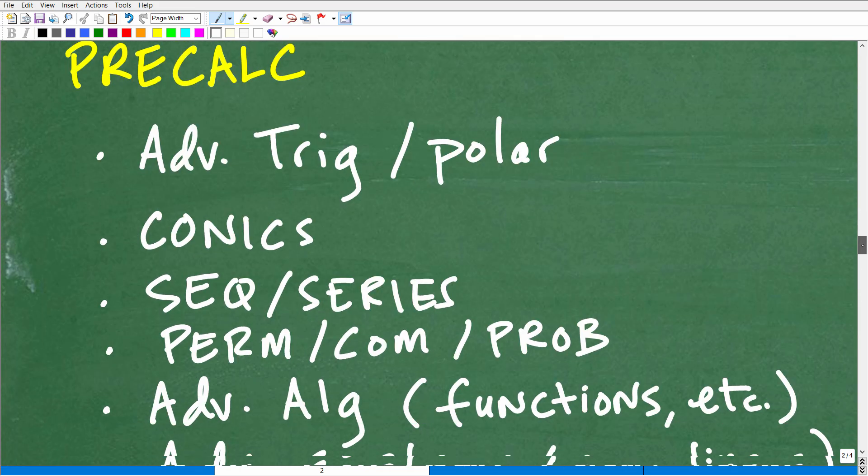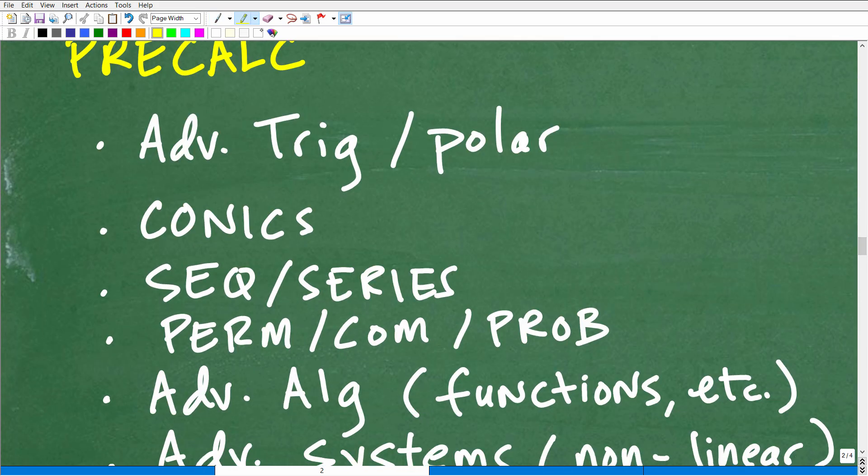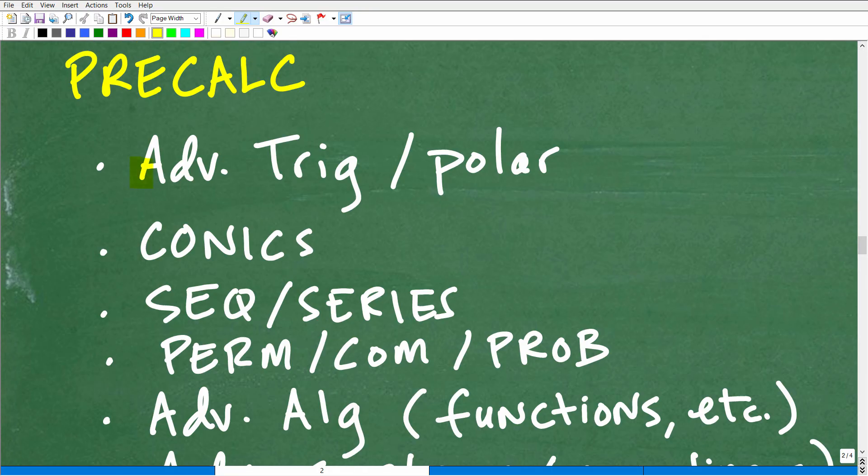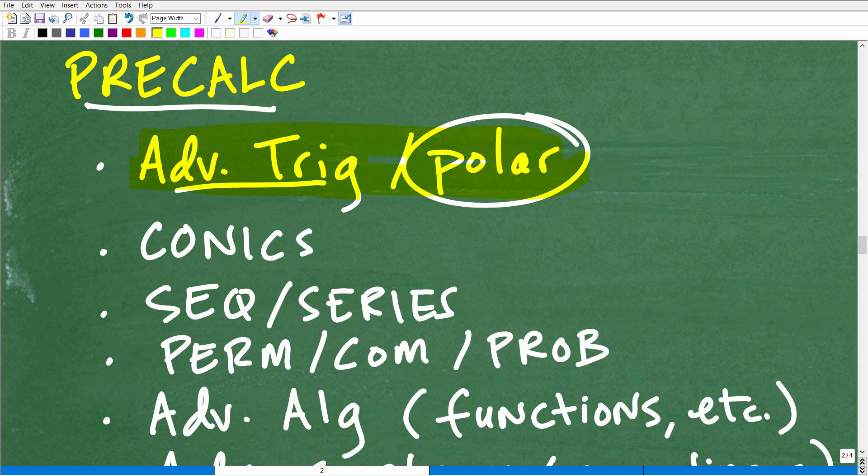So if you didn't do well in Algebra 1, you're going to have another chance to kind of learn it again in Algebra 2. And then you're going to be learning much more advanced stuff. So let's move on to pre-calculus. Pre-calculus really is where you're going to get your advanced trigonometry. In pre-calculus, I would say a good third, one third of the actual course is trigonometry. So you're talking like three or four chapters of trigonometry, tons of different trigonometric concepts, trigonometric functions, trigonometric identities, polar equations, polar coordinates. This is a big, big deal. And you're definitely going to need this for calculus.